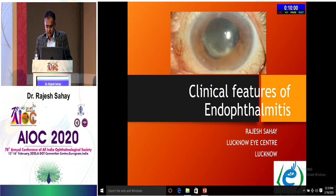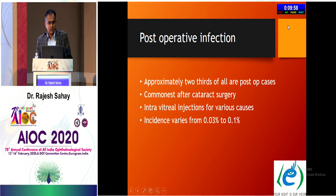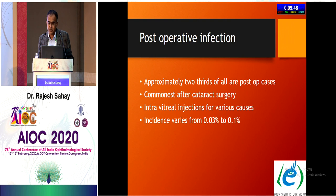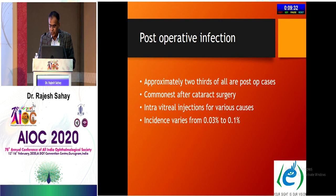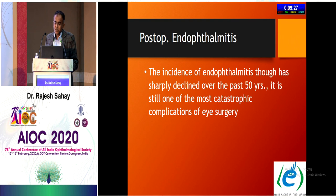The next talk covers clinical features of endophthalmitis. Approximately two-thirds of all post-op endophthalmitis cases are post-operative, most commonly after cataract surgery, with intravitreal injections being the second most common cause. The incidence varies from 0.03% to 0.1% in different series. Though the incidence has sharply declined over the past 50 years, endophthalmitis remains one of the most catastrophic complications of eye surgery.